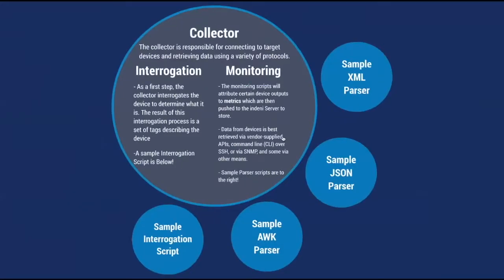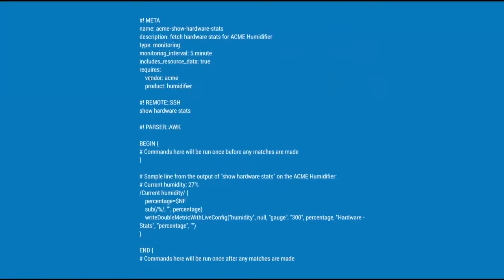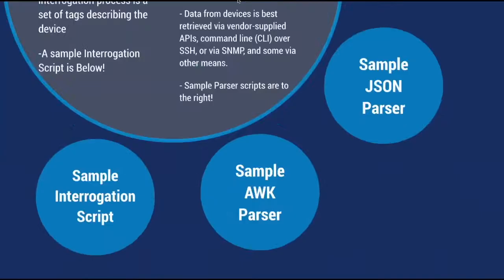Given that information, we have a logical process where we define certain tags that are prerequisites for a lot of these scripts. Here I'm showing you an aux script for our demo, which is the Acme hardware humidifier. These requirements are actually the tags that we wrote in the interrogation scripts. When you outline them here, the Denny instance will build logic to understand that given the vendor Acme and product humidifier, it will run a series of scripts that require those tags under the monitoring script. That's baked into the intelligence of the collector component.